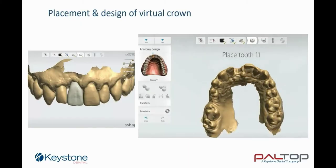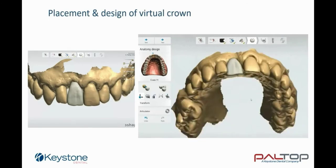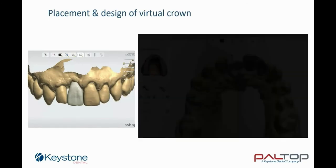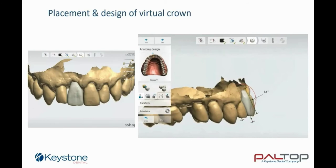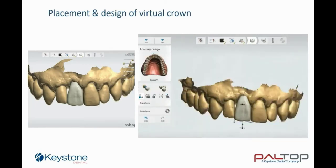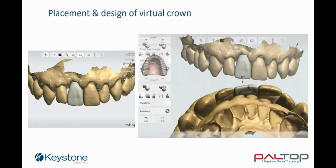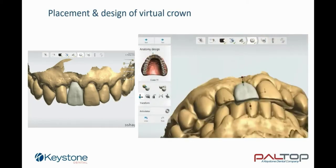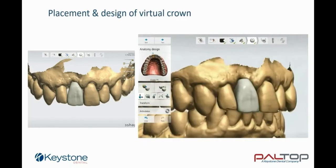Now you can place the virtual crown on the upper surface scan. On clicking on the model, the crown will appear. By using the tools available, you may adjust the angulation of the virtual crown. Drag the crown to adjust the position. By clicking on the green icon, you can adjust the cervical length of the crown. You may rotate the crown if necessary. You can choose the crown from the crown design library, or if you prefer, you can mirror the adjacent tooth.